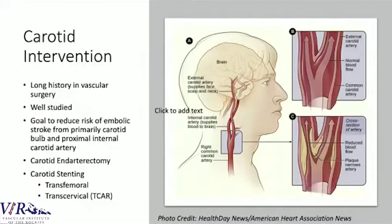Other options include carotid stenting, where we place a stent over the diseased area to widen the lumen and squash the plaque down. Traditionally this was done through femoral access — poking into the groin's femoral artery and using a wire and catheter to reach the carotid. More recently, a new technique called transcervical, or TCAR, carotid stenting was developed, where we make a small incision at the base of the neck and directly access the carotid artery from a much shorter approach.